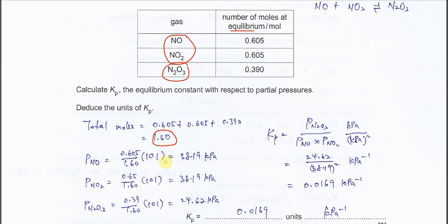After that, you need to get the partial pressure for NO, NO2, and N2O3. How to calculate partial pressure? We need to use the mole fraction. Mole fraction times total pressure. The mole fraction is the mole of one of the reactants, in this case NO, over the total mole. So mole fraction is 0.605 over 1.6 times total pressure, which is 101 kilopascals. The partial pressure for NO you get 38.19.